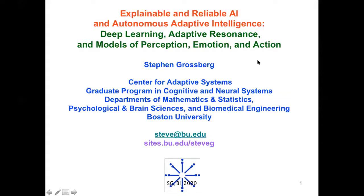As you know, AI is very much in the news these days. My topic today is about explainable and reliable AI and autonomous adaptive intelligence to discuss deep learning, adaptive resonance, and models of perception, emotion, and action.